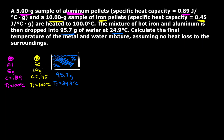We're going to take the aluminum and the iron and place them into the water. This lets me focus on the transfer of heat from the hot objects to the cold one. The aluminum and iron are at 100 degrees Celsius and the water is at 24.9 degrees Celsius, so heat always flows from hot to cold. I'll draw an arrow from the iron to the water and an arrow from the aluminum to the water to represent the flow of heat.